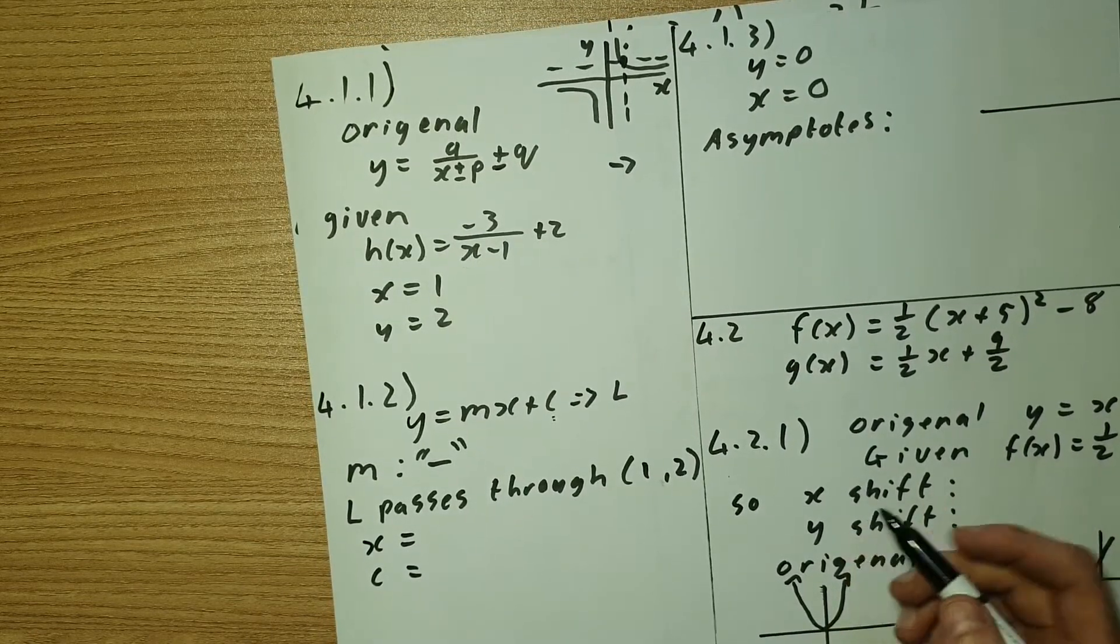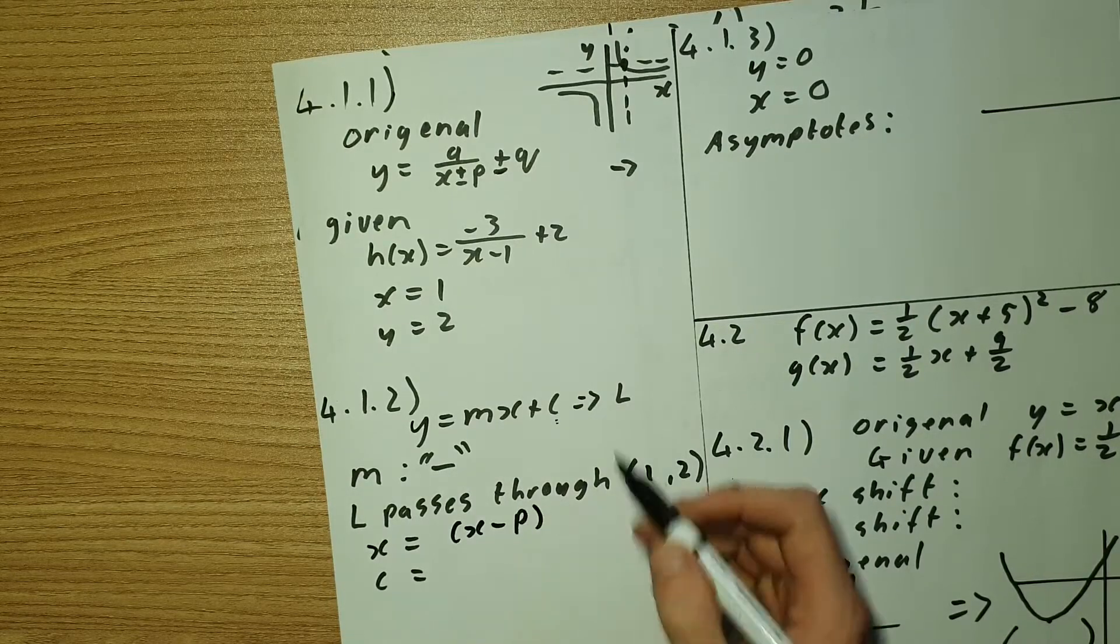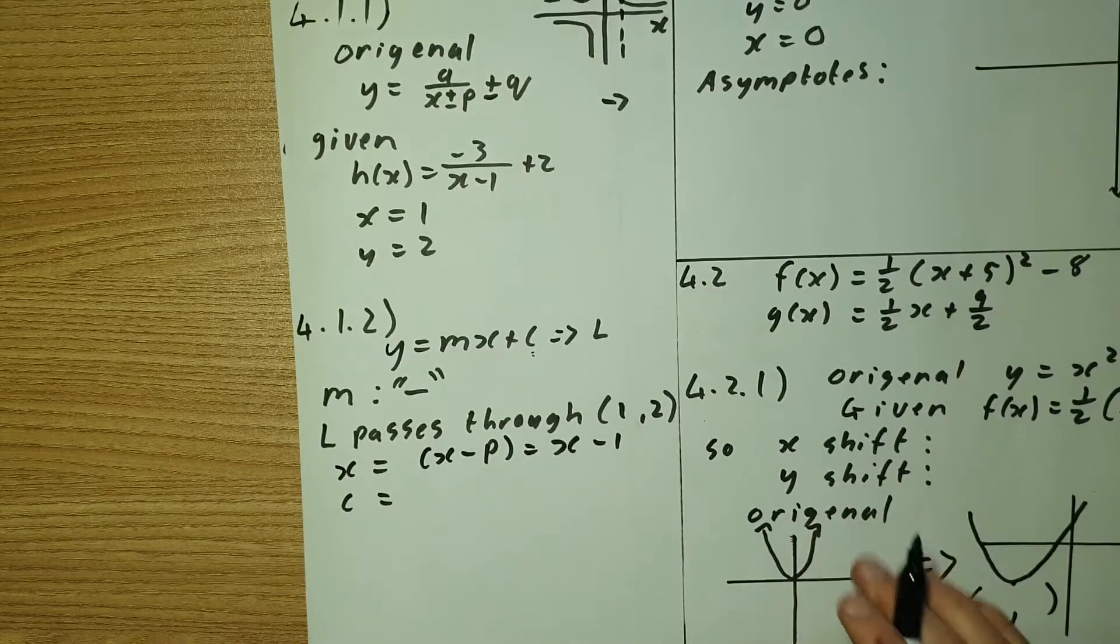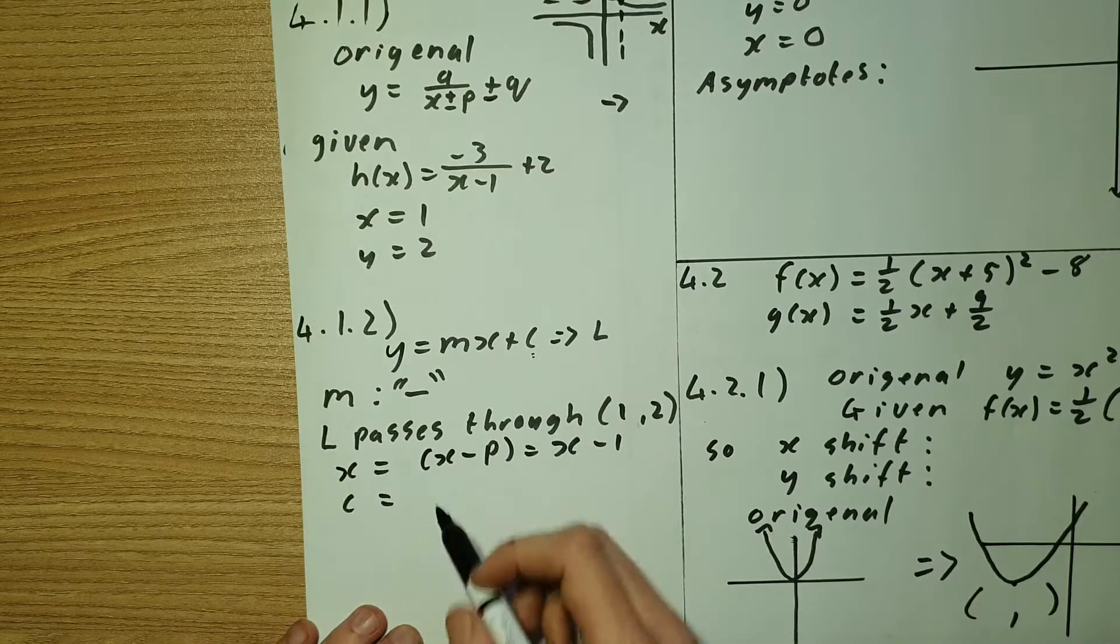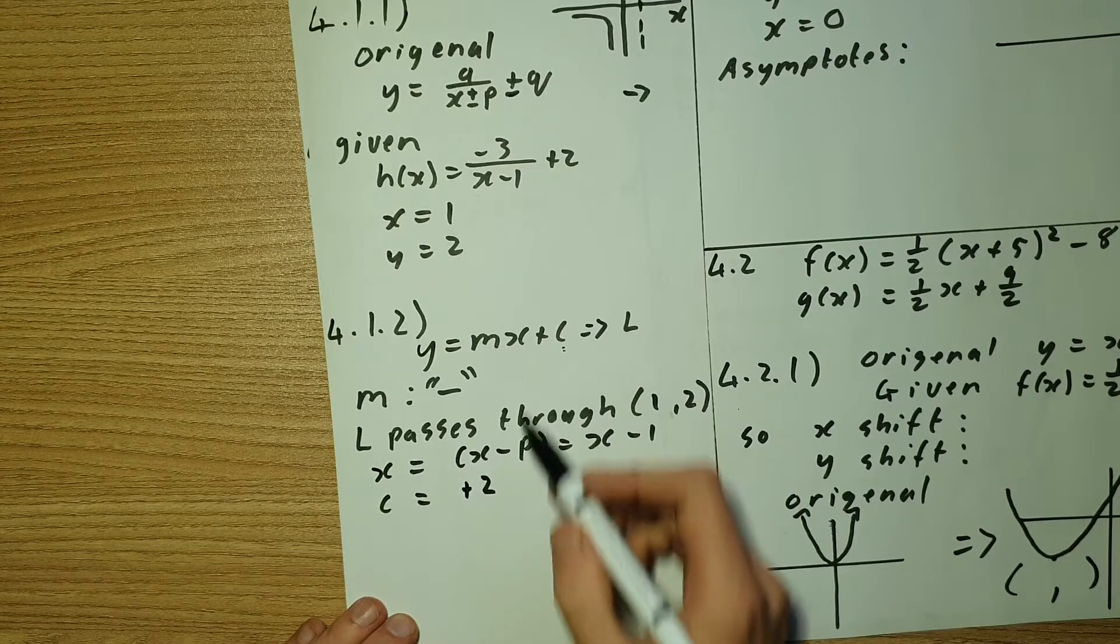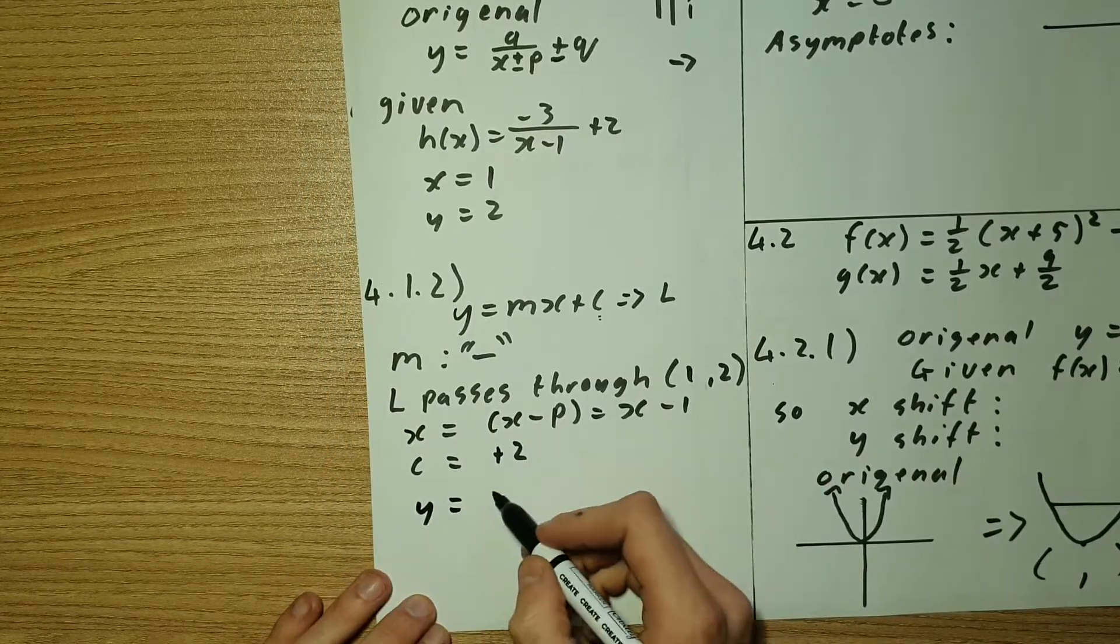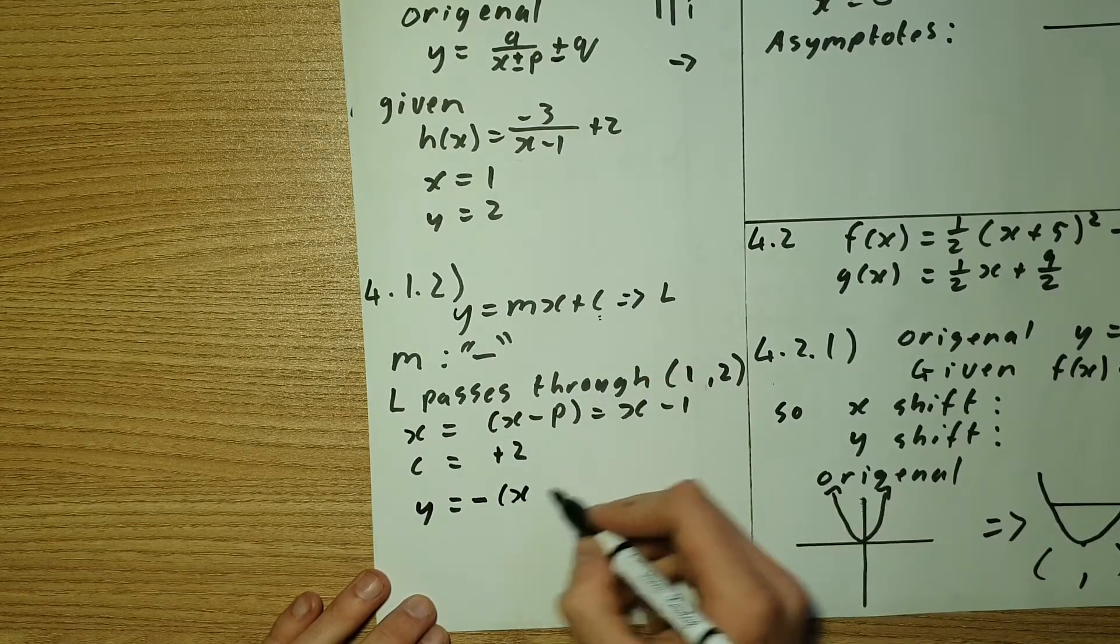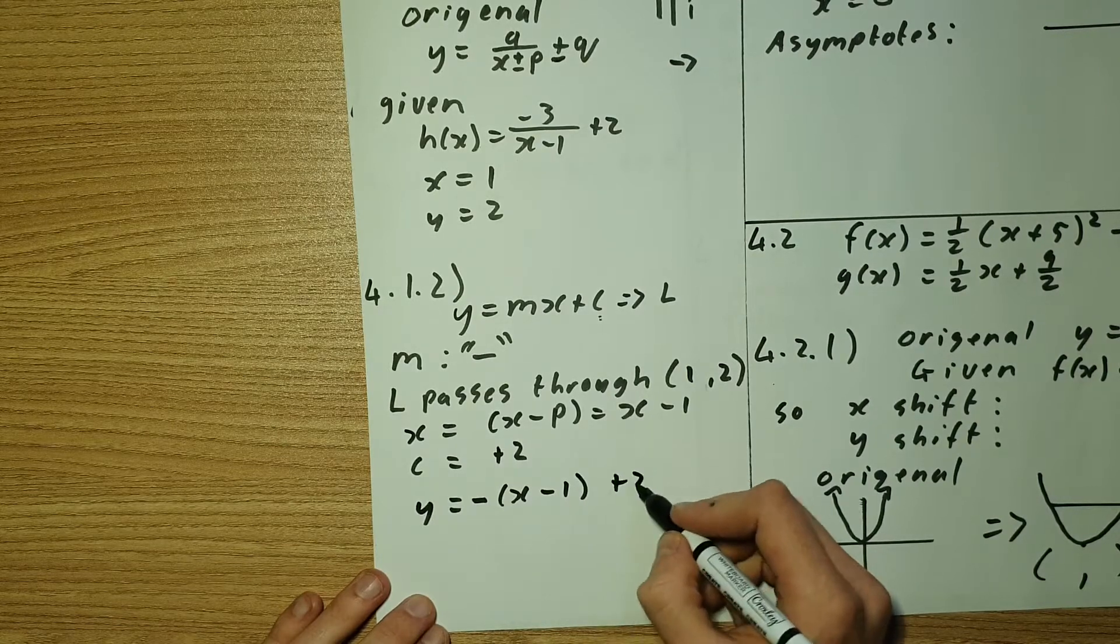We are going to have x equal to x minus p. In this case it's equal to x minus 1. And c is going to equal to plus 2. Now we can substitute this into our formula. So we'll have y equals to negative gradient, x minus 1 plus 2.